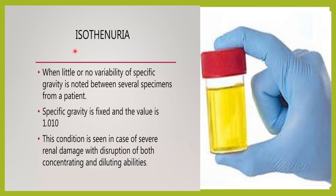And some cases, that is called isosthenuria, wherein the specific gravity of urine will be fixed at 1.010. This condition you will see in case of severe kidney damage, wherein the kidney's concentrating ability and diluting ability — dono kharab ho jaate hai — and that time the specific gravity will be fixed at 1.010.